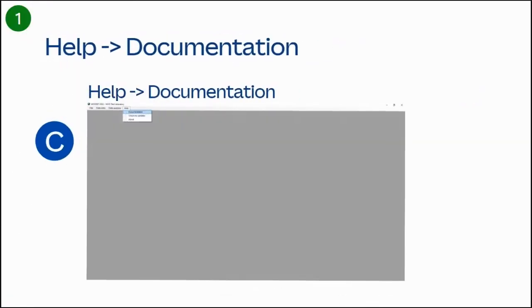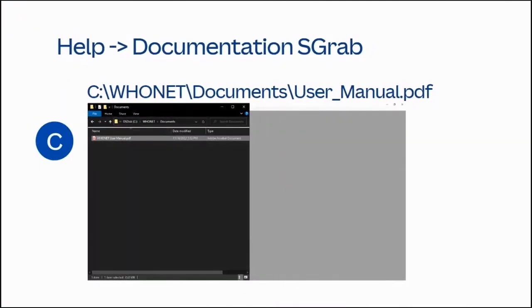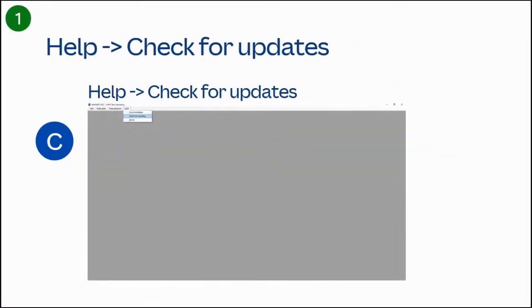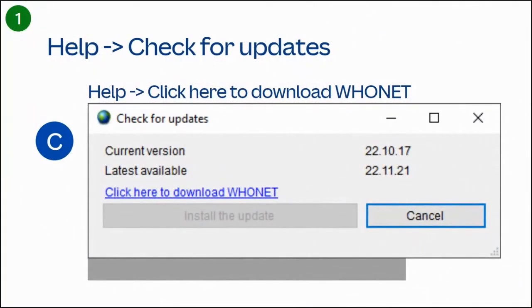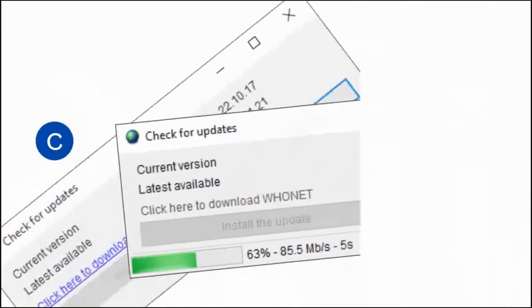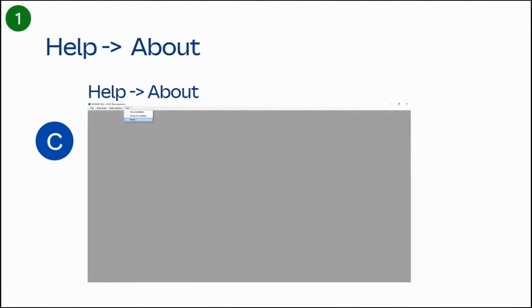Select Help then Documentation to view the HUNET user manual — a PDF file broken into the same six modules as this training course. To check for HUNET updates, select Help then Check for Updates. Click the link labeled 'Click Here to Download HUNET', and once the green progress bar reaches 100%, click the Install the Update button, then click Install to install the latest stable release.